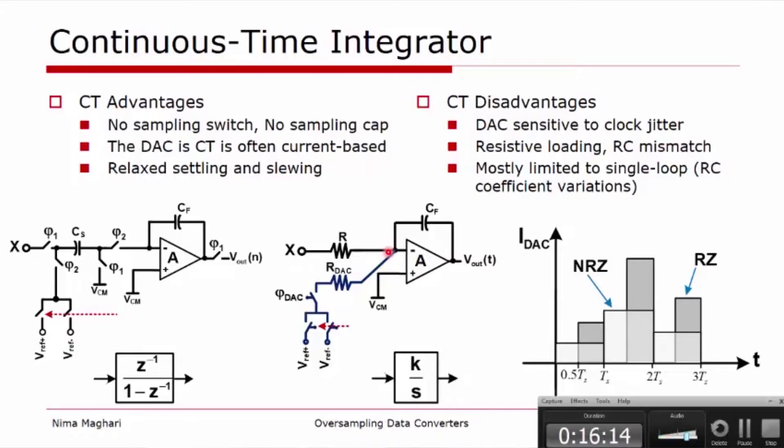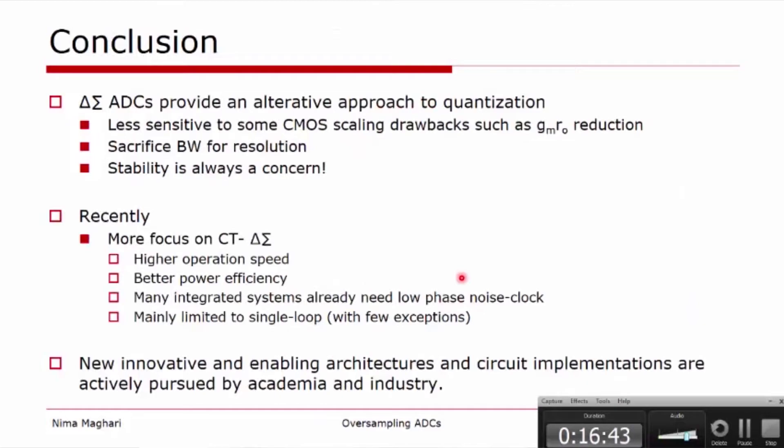However, it comes with some other disadvantages, and that is the DAC pulse shown here is very sensitive to the phase noise of the clock or clock jitter. And these structures typically have resistive loading on the output of the op-amp, therefore they see a low impedance output. And they are mostly limited to the single loop because of this large RC variation. It would be almost impractical to make them in a multi-loop architecture.